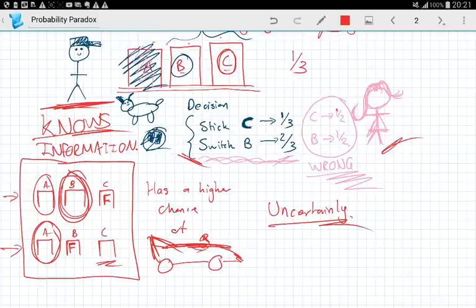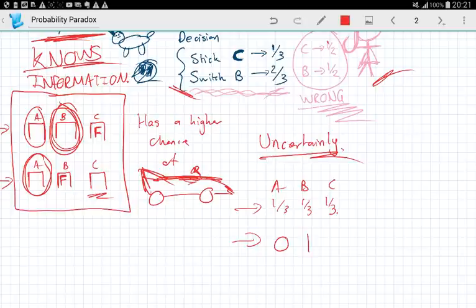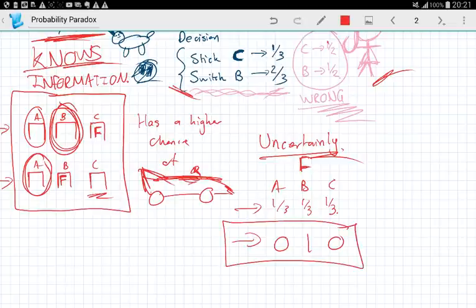Okay, the Ferrari already is behind one of these doors, which means the true probabilities, instead of it being A, B, C, a third, a third, a third, the true probabilities is actually zero one zero, if it is actually behind Ferrari. We don't know the true probabilities. And so we estimate the perceived probabilities.